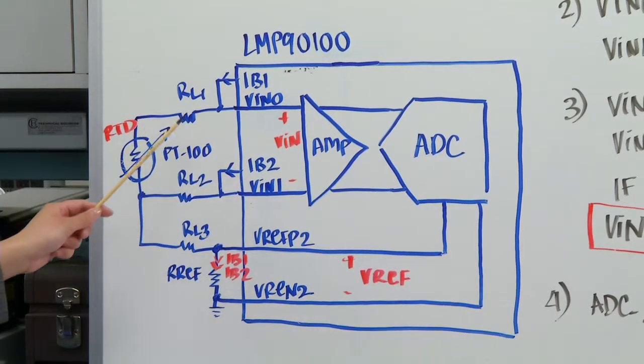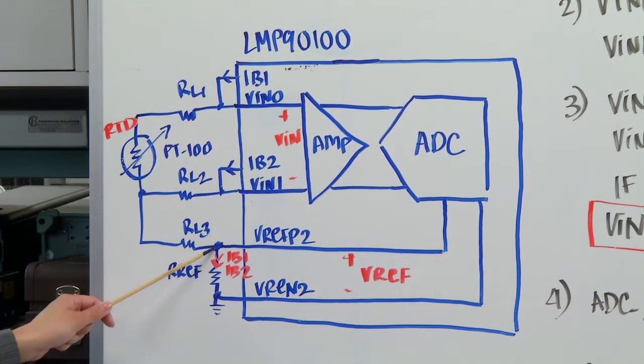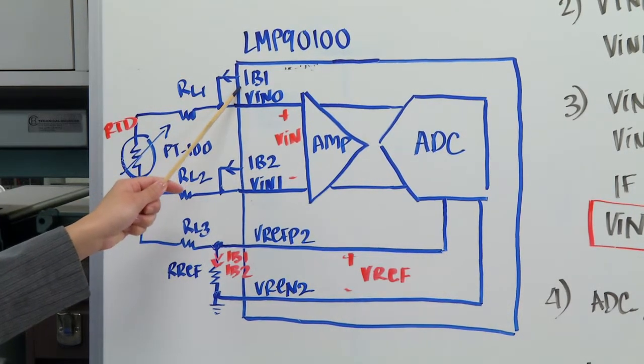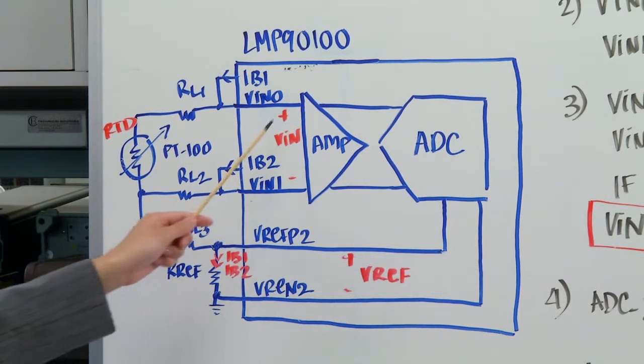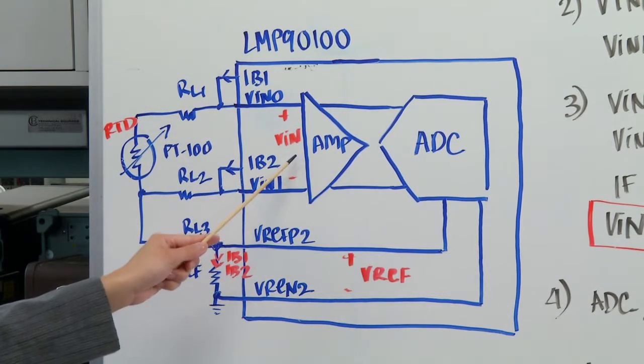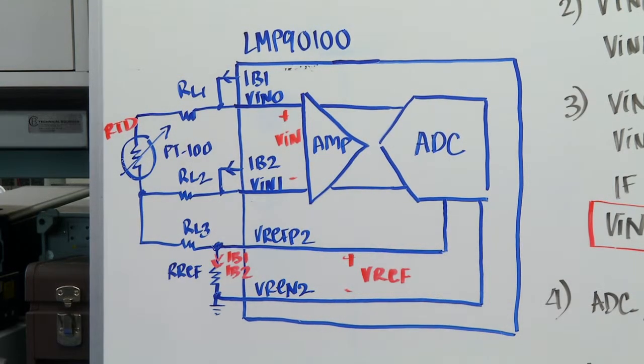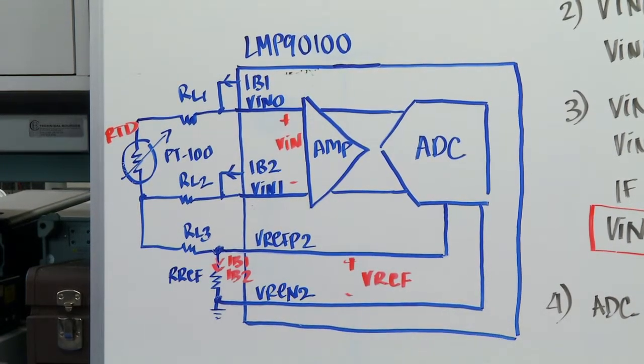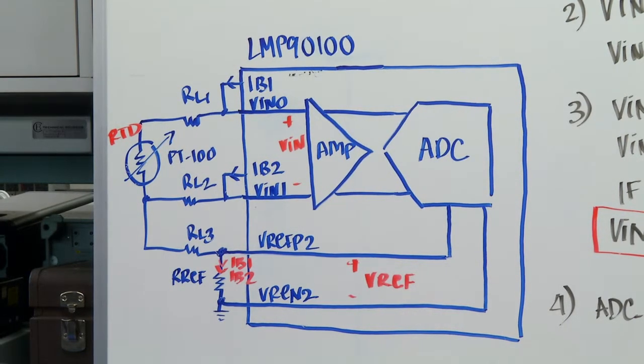In this case we have a three wire configuration, wire one, wire two and wire three. Now the RTD will have a bias current, in this case it will be IB1 and IB2 converting this resistance to a voltage. The voltage of the RTD will be connected to some sort of amplifier and or a digitizer such as an ADC. In this example we will use the LMP90100 as a 24 bit Sigma Delta ADC with a programmable amplifier with a gain of 1 to 128.